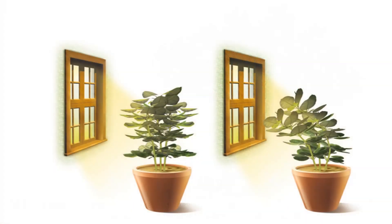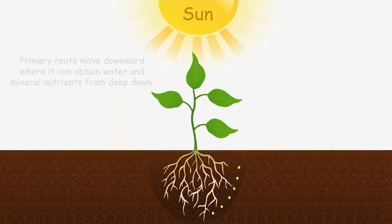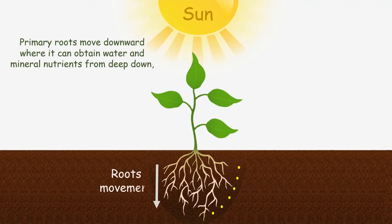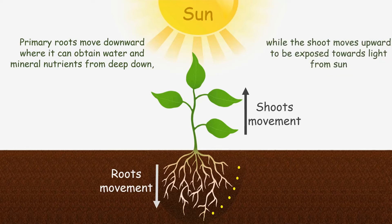Movements of higher plants are chiefly in the form of bending, twisting, or elongation of certain plant parts or organs towards resources. For example, the primary root moves downward where it can obtain water and mineral nutrients from deep down, while the shoot moves upward to be exposed towards light from the sun.